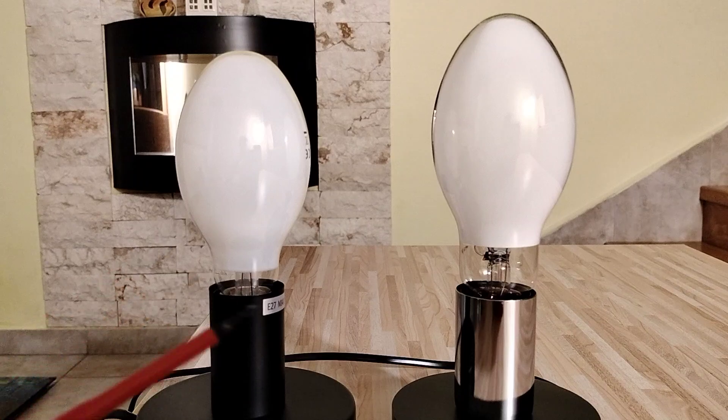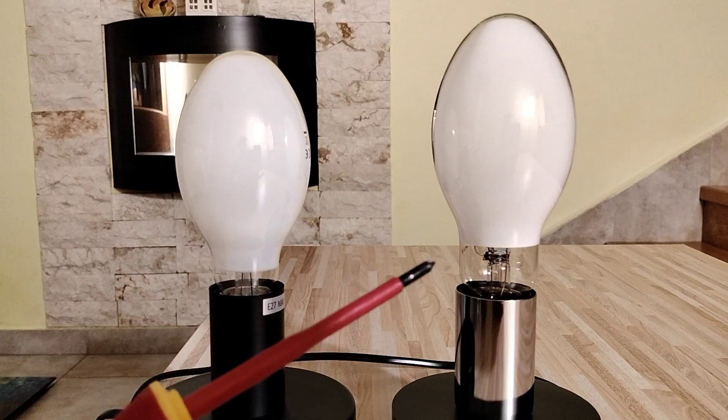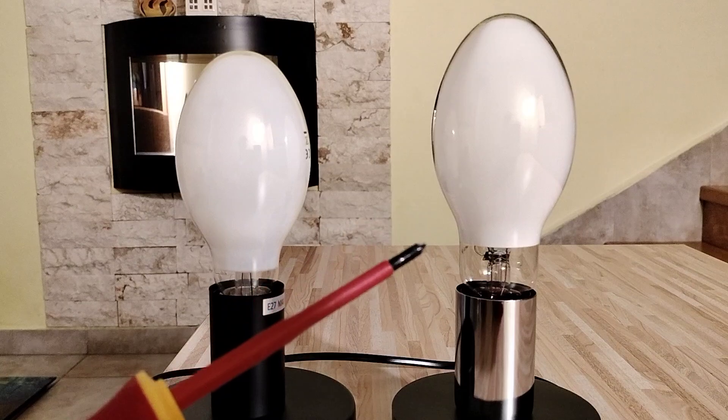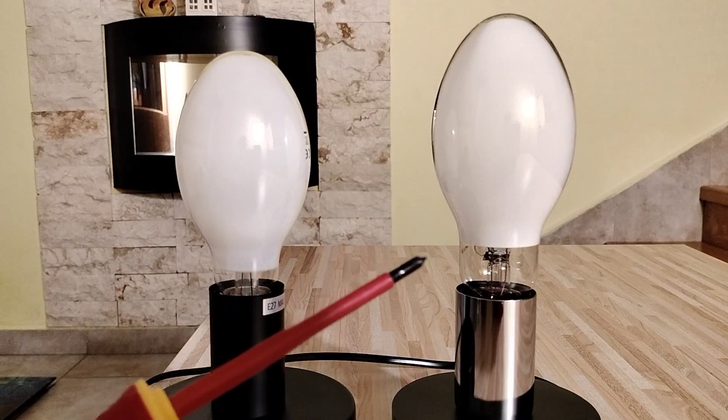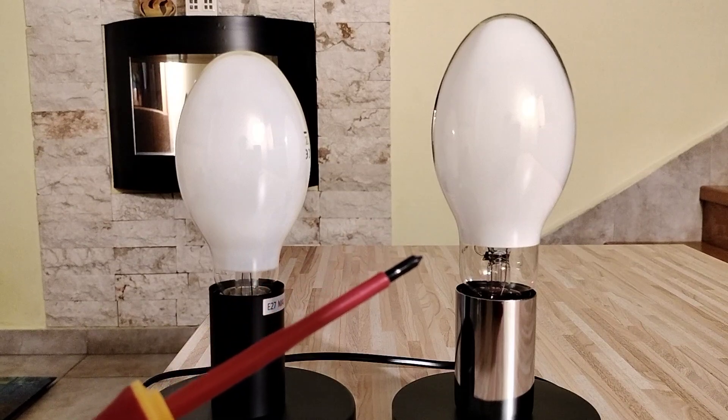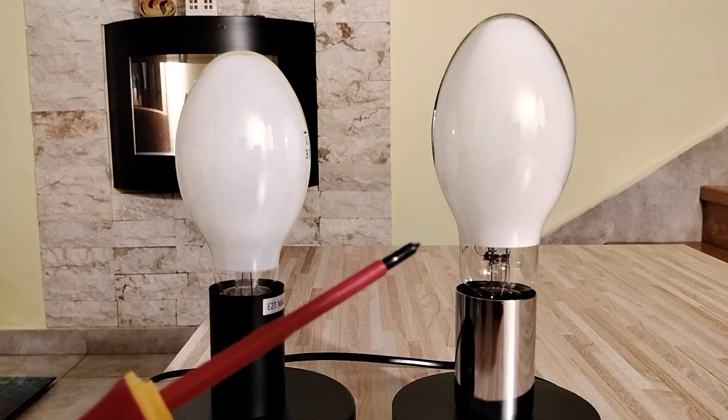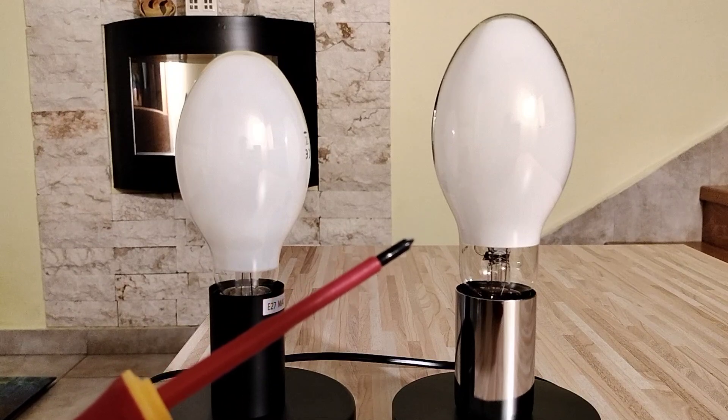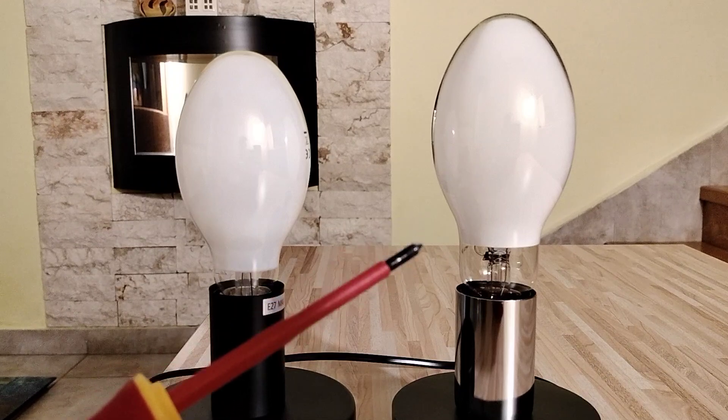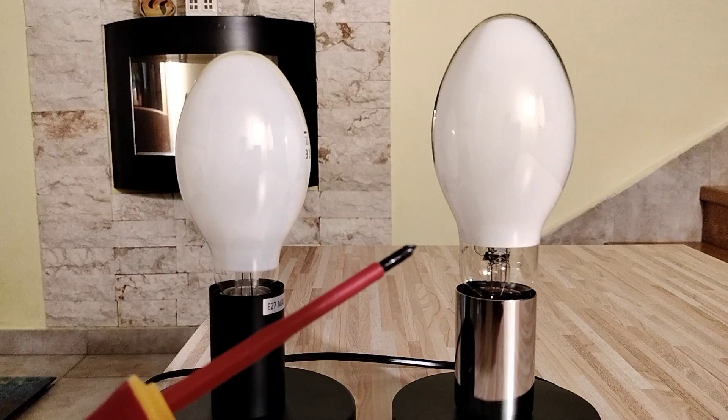And the Kelvin scale with this mercury vapor lamp is from 4500 to 5000. So with this lamp we have cool white light.